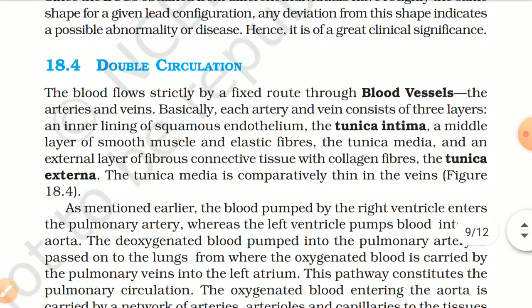18.4 Double Circulation. Blood flows through blood vessels — arteries and veins. Each artery and vein consists of three layers: an inner lining of squamous endothelium called tunica intima; a middle layer of smooth muscle and elastic fibres called tunica media; and an external layer of fibrous connective tissue with collagen fibres called tunica externa. The tunica media is comparatively thin in veins.